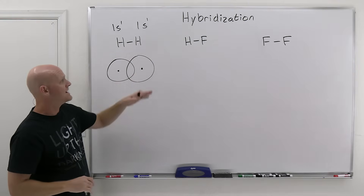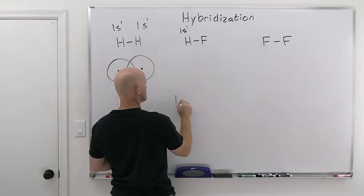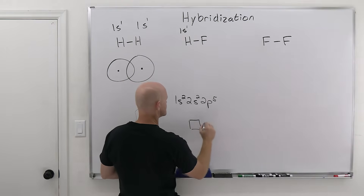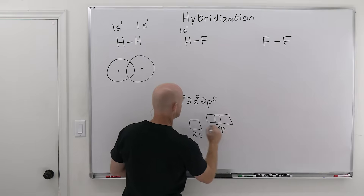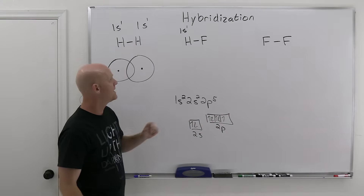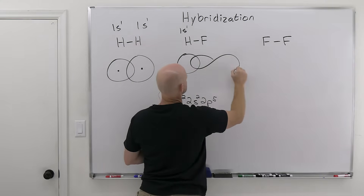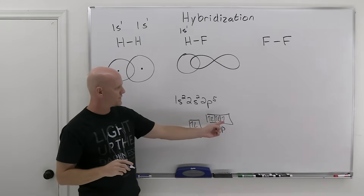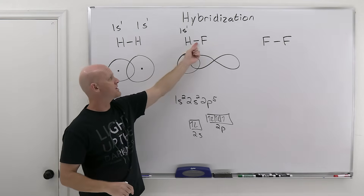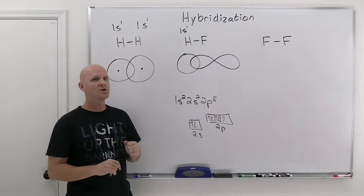In the case of HF, it's a little more complicated. Hydrogen is 1s1, but fluorine is 1s2 2s2 2p5. If we draw out the valence electrons in the 2s and 2p, we see the unpaired electron is in one of the p orbitals. So hydrogen's 1s orbital overlaps with fluorine's 2p orbital — the one with the unpaired electron in it. Overlapping orbitals leads to bond creation, with the sharing of two electrons in those overlapping orbitals.